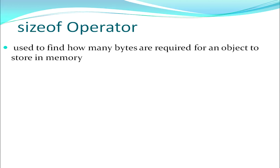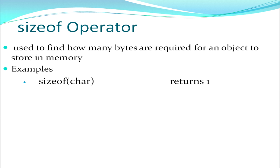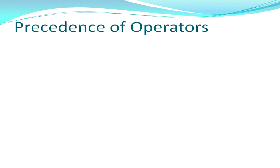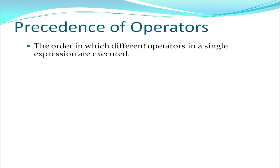Next we have the sizeof operator. It is used to find out how many bytes are being consumed by a variable or a data type. It is written as sizeof without any space. If I say sizeof(char), since char takes one byte, it returns 1. If I say sizeof(int) it returns 2. If I say sizeof(float) or any variable name, it returns 4.